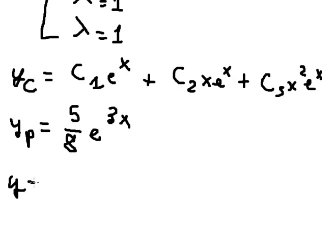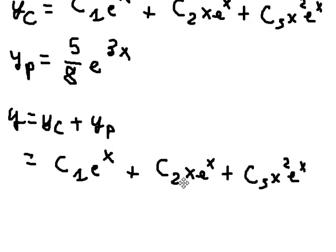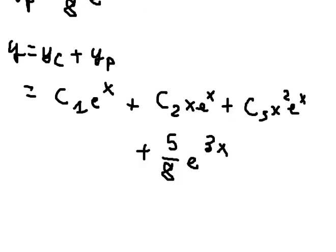Now we have the final answer. The general solution is y equals yc plus yb — that is yc as found above, plus yb equals 5/8 e^(3x). This is the end. Thank you for watching.